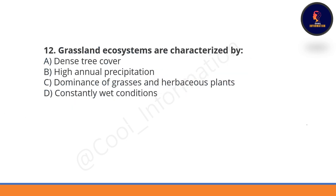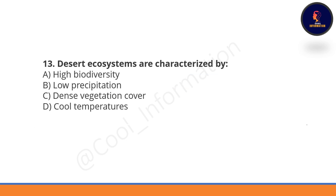Grassland ecosystems are characterized by dense tree cover, high annual precipitation, dominance of grass, or herbivorous plants. Option C is correct — dominance of grass characterizes grassland ecosystems.